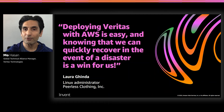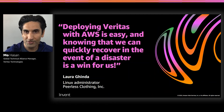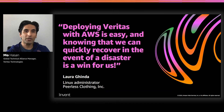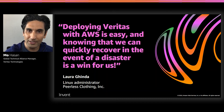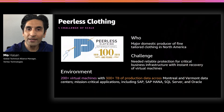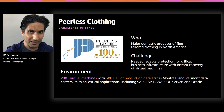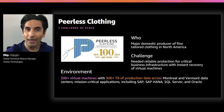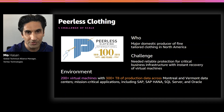Let me walk you through an example of one of our customers who used our joint solution to take their organization to the next level. Laura from Peerless Clothing said: 'Deploying Veritas with AWS is easy, and knowing we can quickly recover in the event of a disaster is a win for us.' Peerless Clothing, a great company out of Canada, is the largest domestic producer of fine tailor clothing in North America. They have hundreds of VMs and data in hundreds of petabytes across multiple sites, and many critical applications like SAP, SAP HANA, Oracle, and Microsoft SQL Server. What they wanted was a single, reliable vendor to protect all their environments.